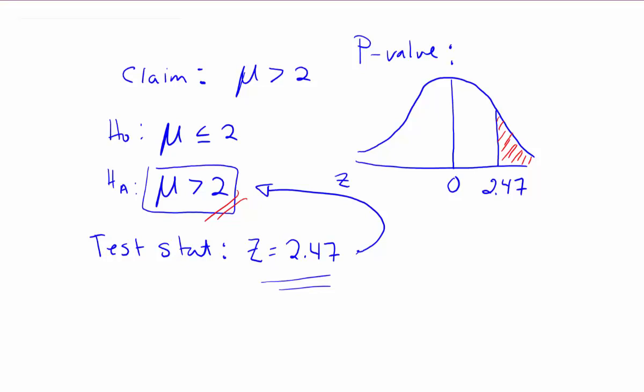Here it's just a one tail test, it's a right tail test, so we find this area in red that's to the right of the test stat. Then all we have to do is look that up on our z chart.